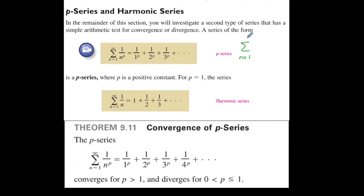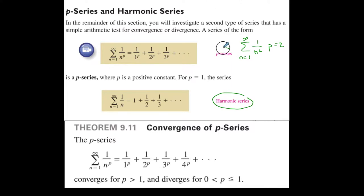For example, the summation from 1 to infinity of 1 over n squared is a p-series situation where p is equal to 2. This is a p-series. And the harmonic series is a special type of p-series where p is equal to 1 — we saw this earlier. It's a special version of a p-series.